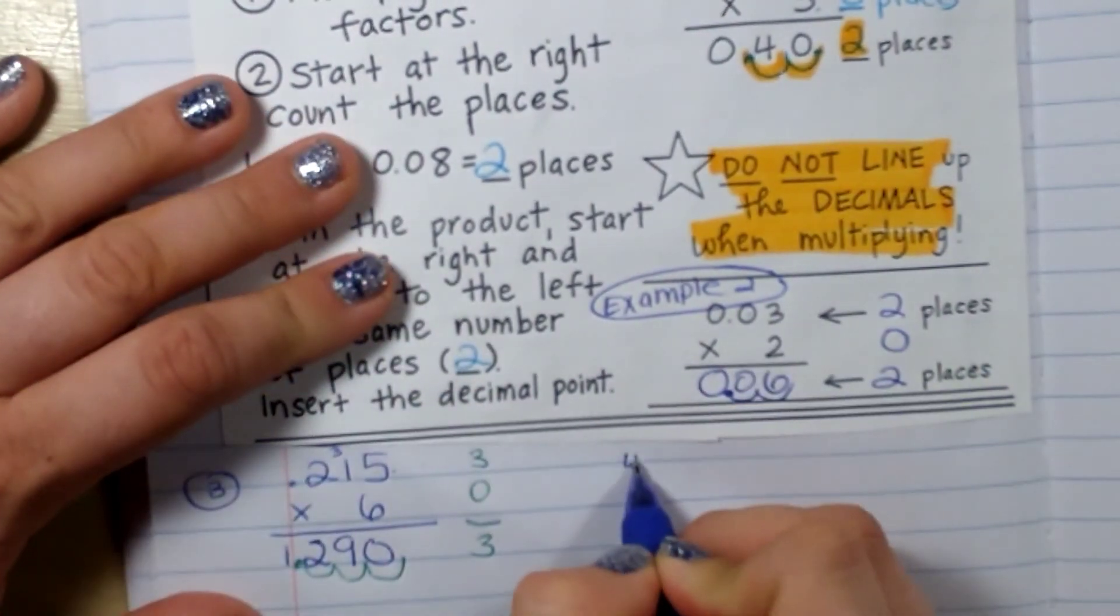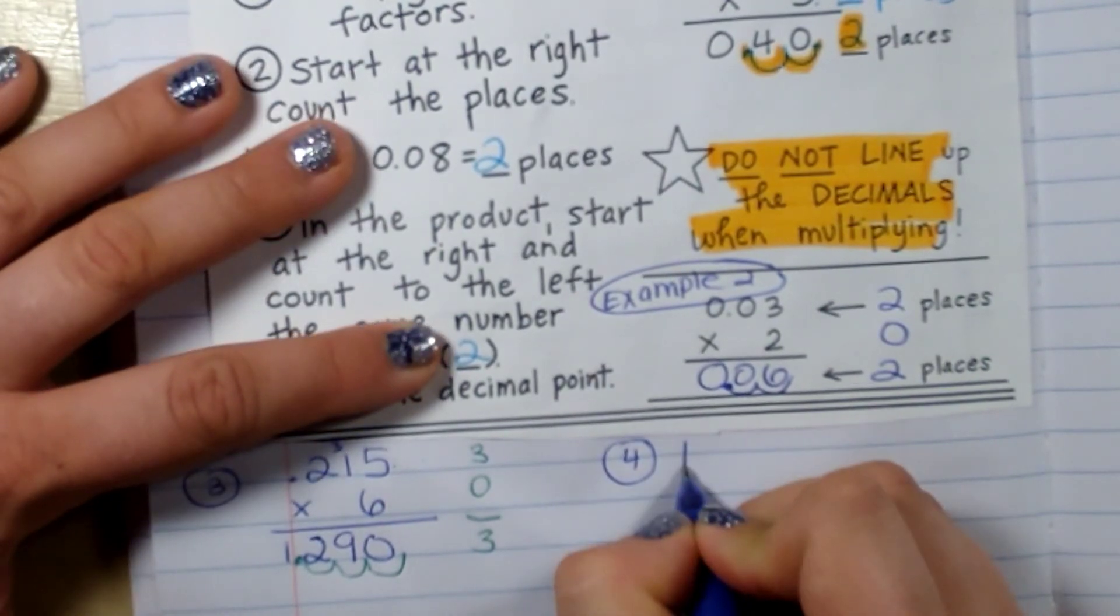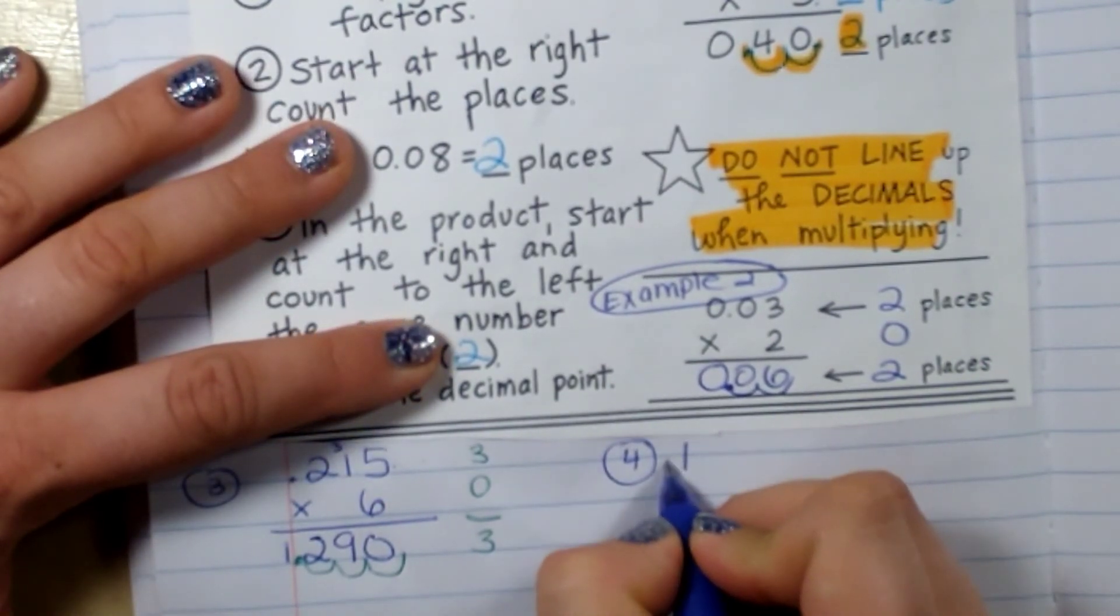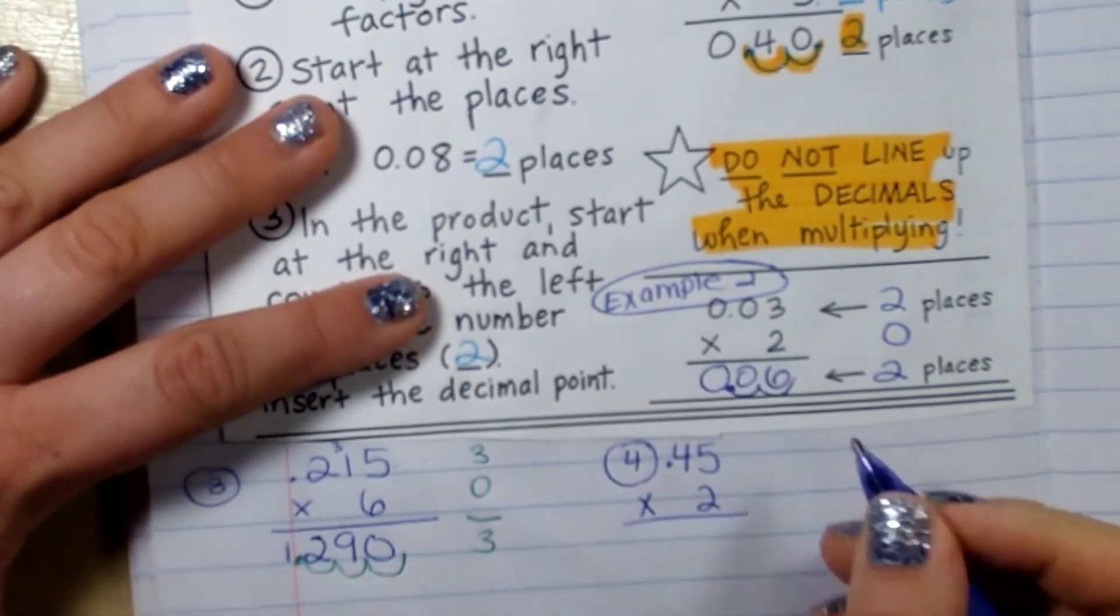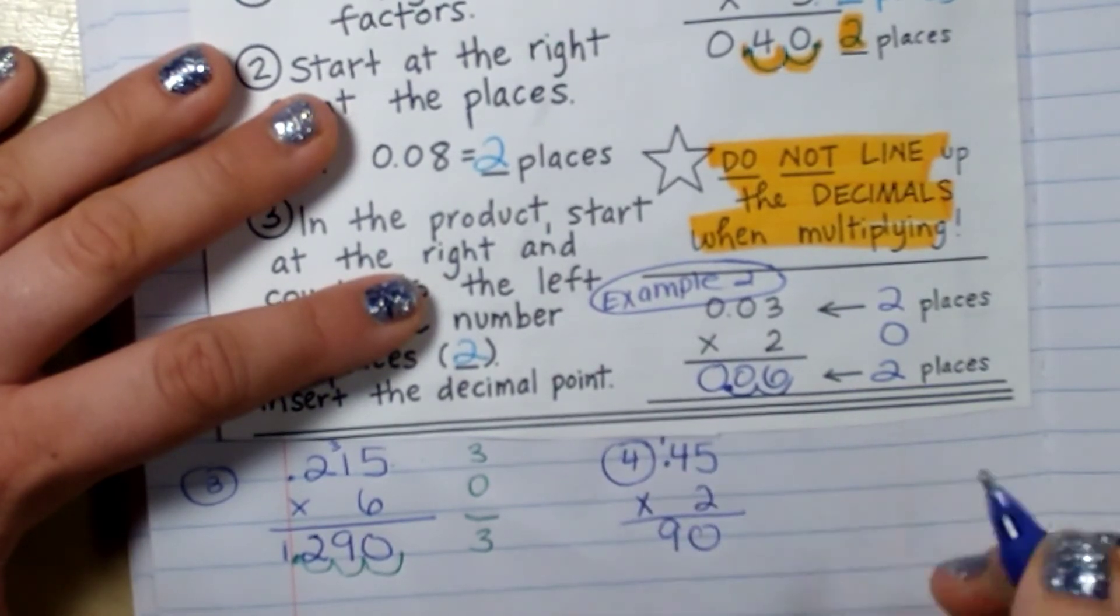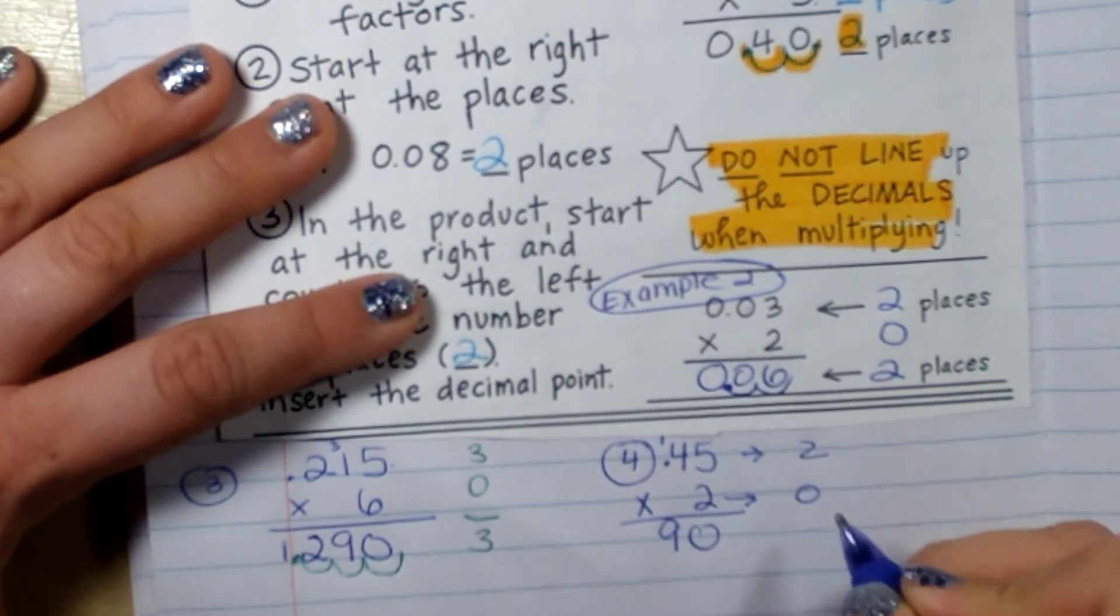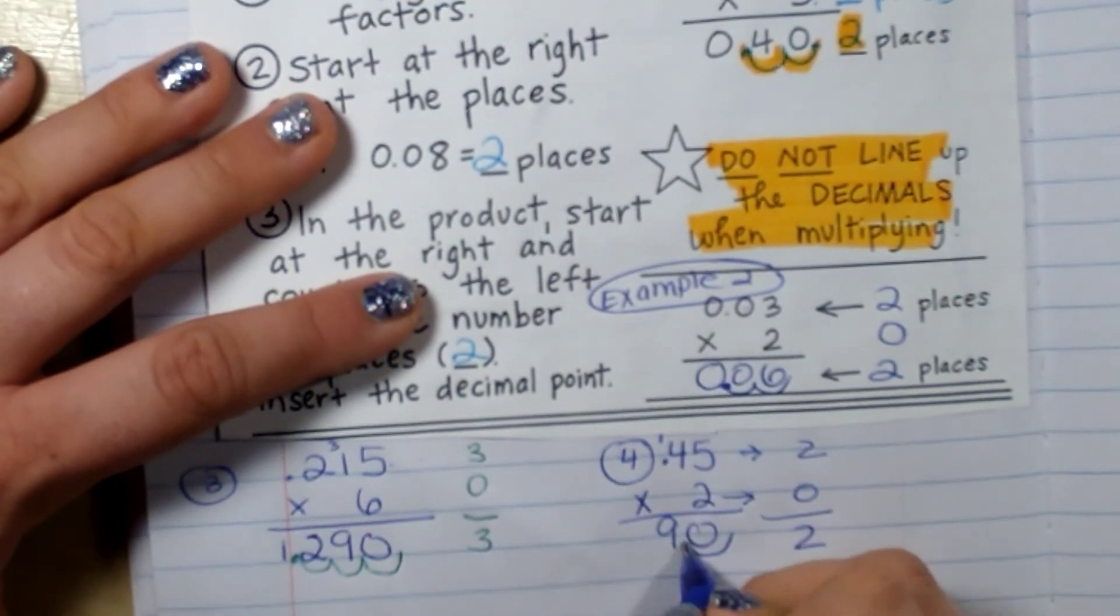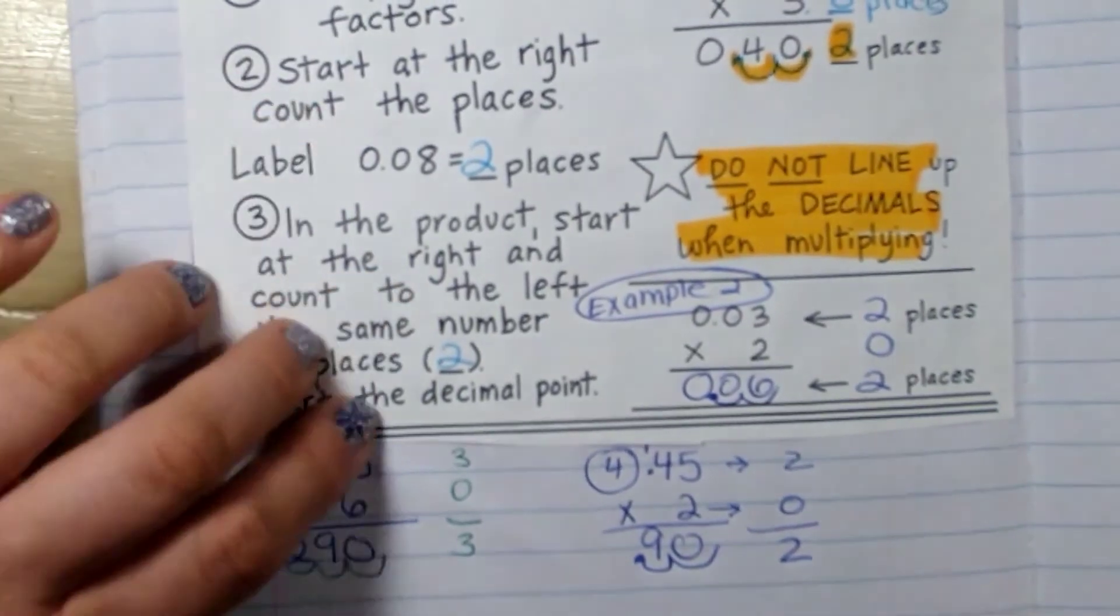My next and last problem on this page will be 45 hundredths times 2. This would be 10 and 9. This is 2 place values, that is 0 place values. So I'm moving it over 1, 2, so it would be 90 hundredths or 9 tenths.